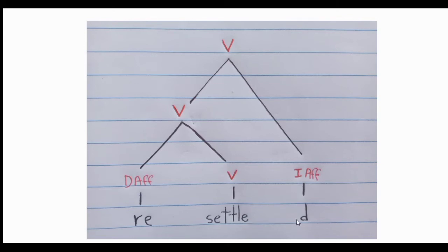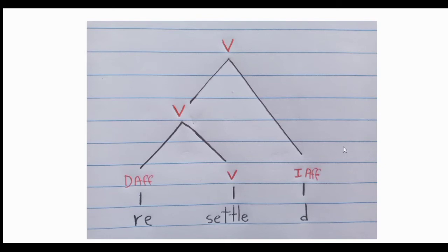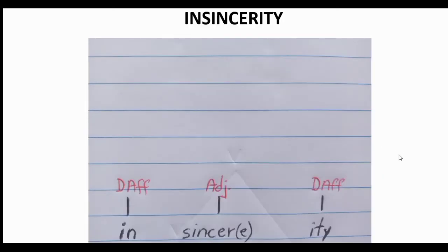The inflectional morpheme '-ed' is telling you that this verb is in past tense. Remember that inflectional affixes indicate a grammatical function. In this case the suffix '-ed' tells you that this verb is in past tense. Now let's continue with another example: the word 'insincerity'.